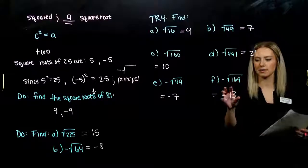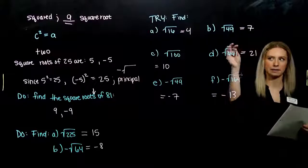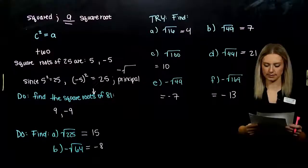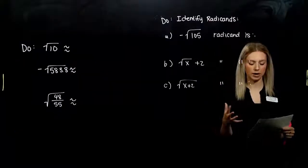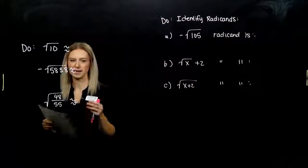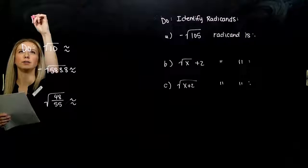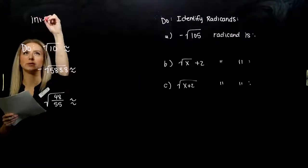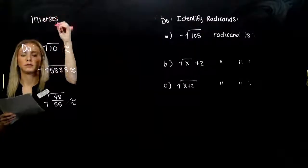We can always check if I take that number and square it, do I get the thing on the inside in all of those cases. So, we can think of these processes, squaring a number and finding the square root, as inverses of each other. They're undoing what the other is producing. That's what an inverse does.